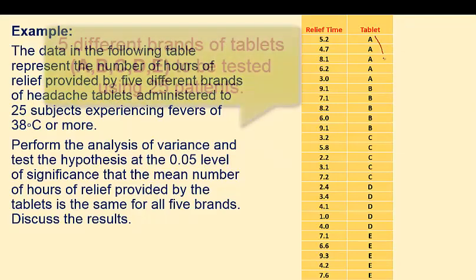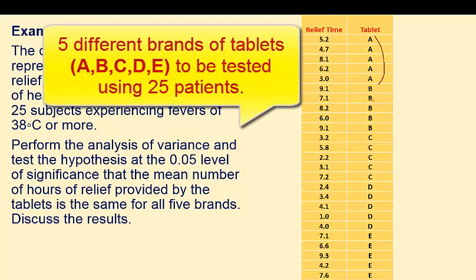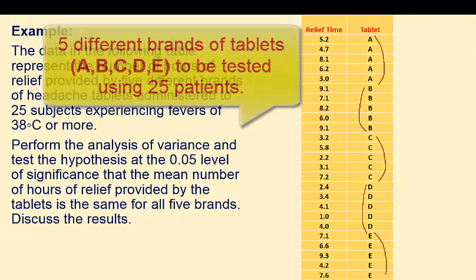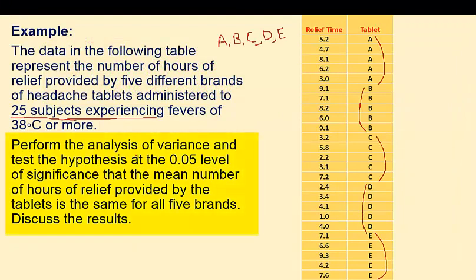Brand one is denoted with A, brand two with B, brand three with C, brand four with D, and brand five with E. Perform the analysis of variance and test the hypothesis at a five percent level of significance that the mean number of hours of relief provided by the tablet is the same for all five brands.